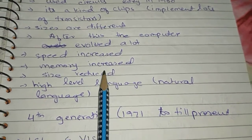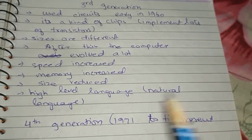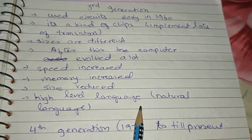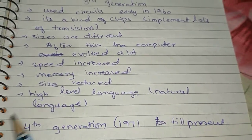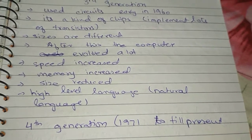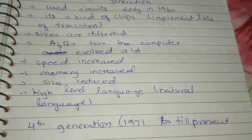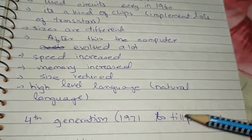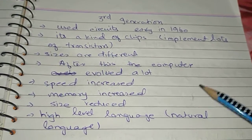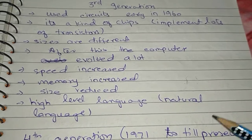After this, computers started to develop further — speed increased, memory improved, and size was reduced. The third generation of computers used high-level or natural language. For example, whereas computers work in binary 0 and 1, the natural language allowed users to interact in English, and the computer would process it accordingly.